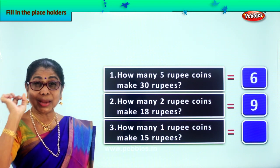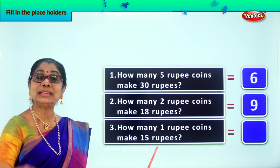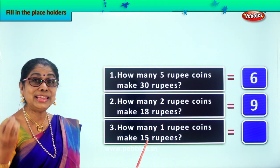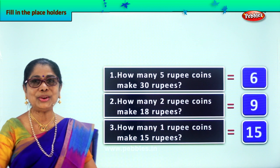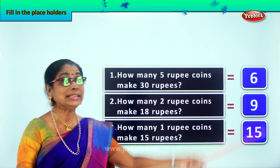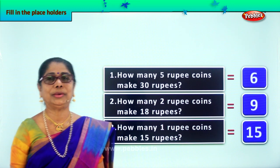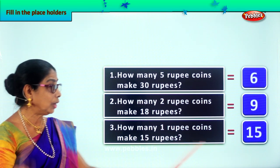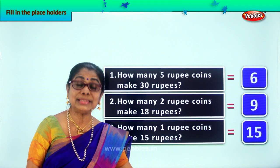How many 1-rupee coins make 15 rupees? How many do we need to make 15? Certainly we need 15 to make 15 rupees. We need 15 one-rupee coins. So how many 5-rupee coins to make 30 rupees? 6 five-rupee coins. How many 2-rupee coins to make 18 rupees? We need 9 two-rupee coins. And how many 1-rupee coins to make 15 rupees? 15 one-rupee coins. Did you enjoy filling in these placeholders correctly? Good.